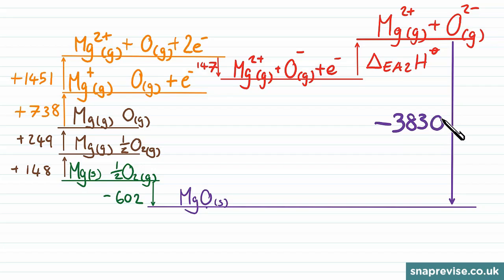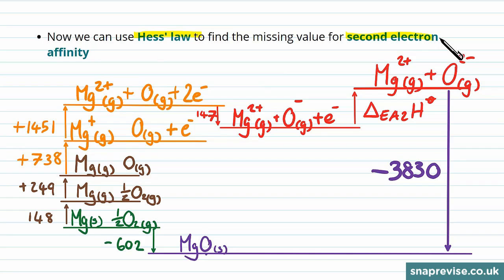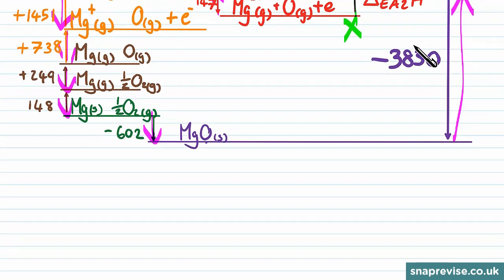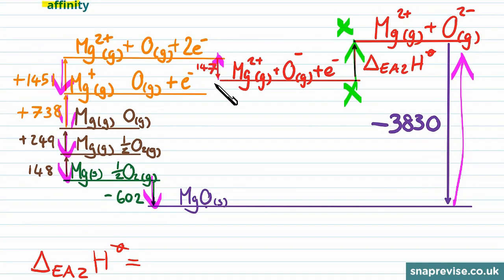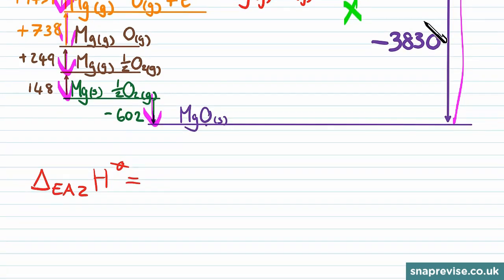Now we can use Hess's law to find the missing value. We're looking to go from this level here to this level here, and we don't know this path. So instead we're going to sum up each of these energy changes here to form a second path, which by Hess's law will have the same energy change. So if we write out each of those changes one by one, what we're looking for is the change for the electron affinity, the second electron affinity of oxygen. We're increasing in energy here by 147 kilojoules per mole. So that's plus 147.